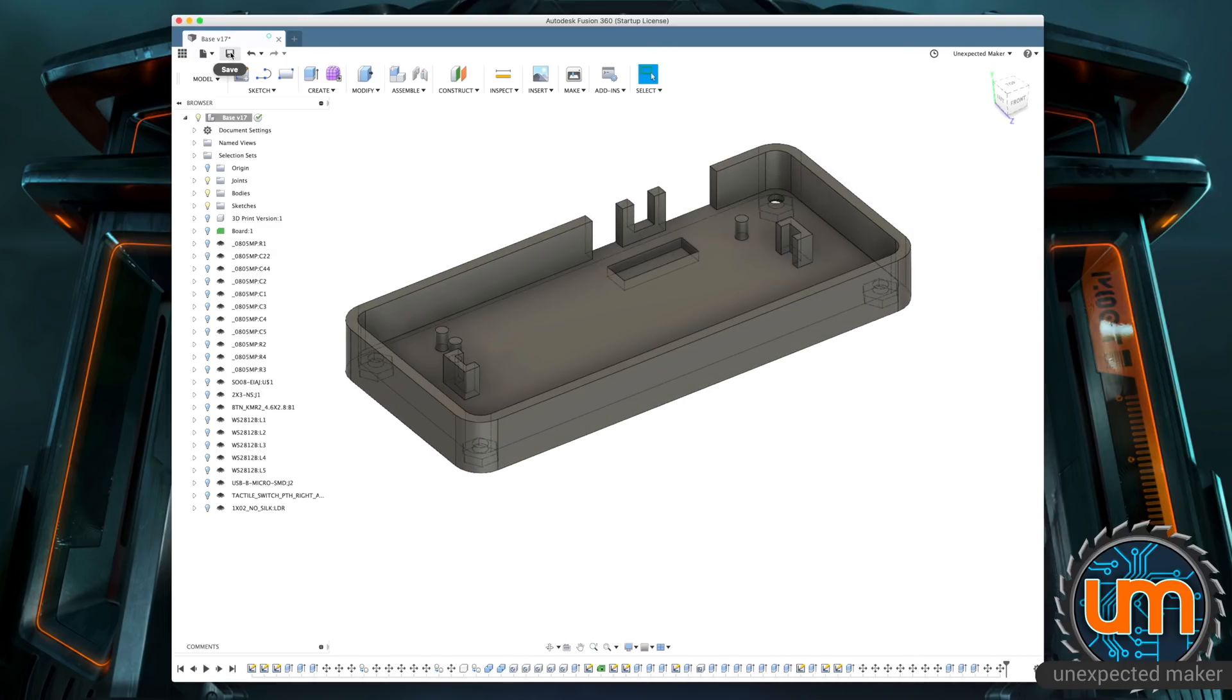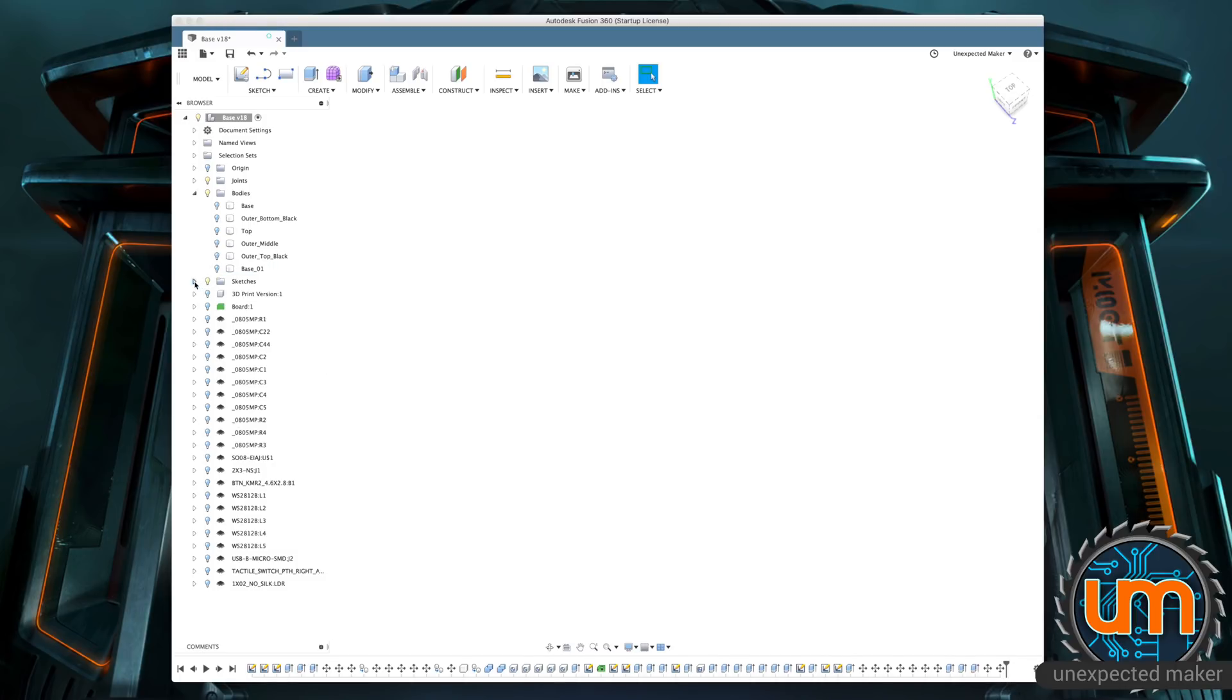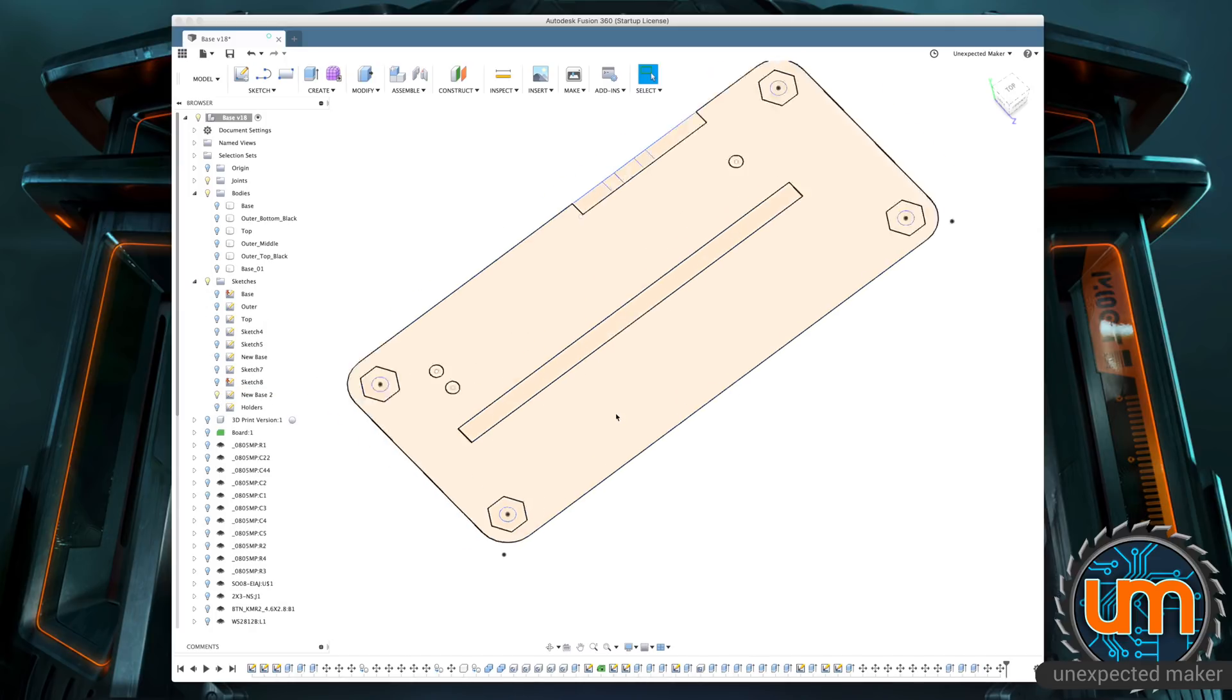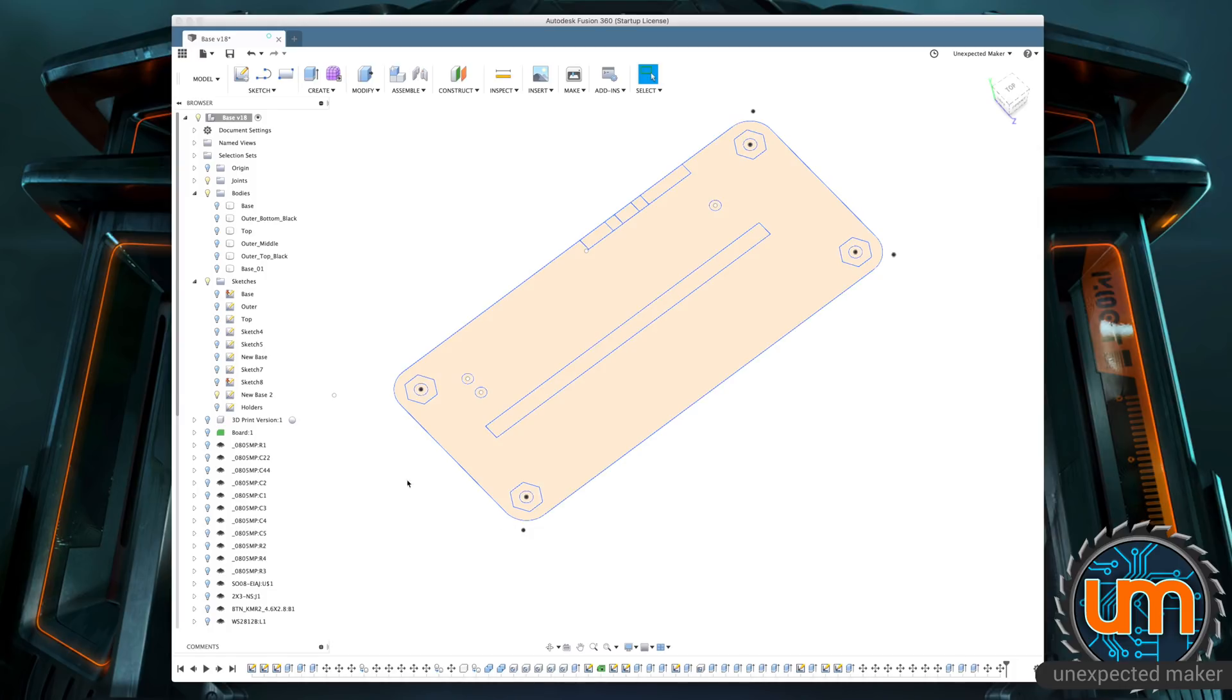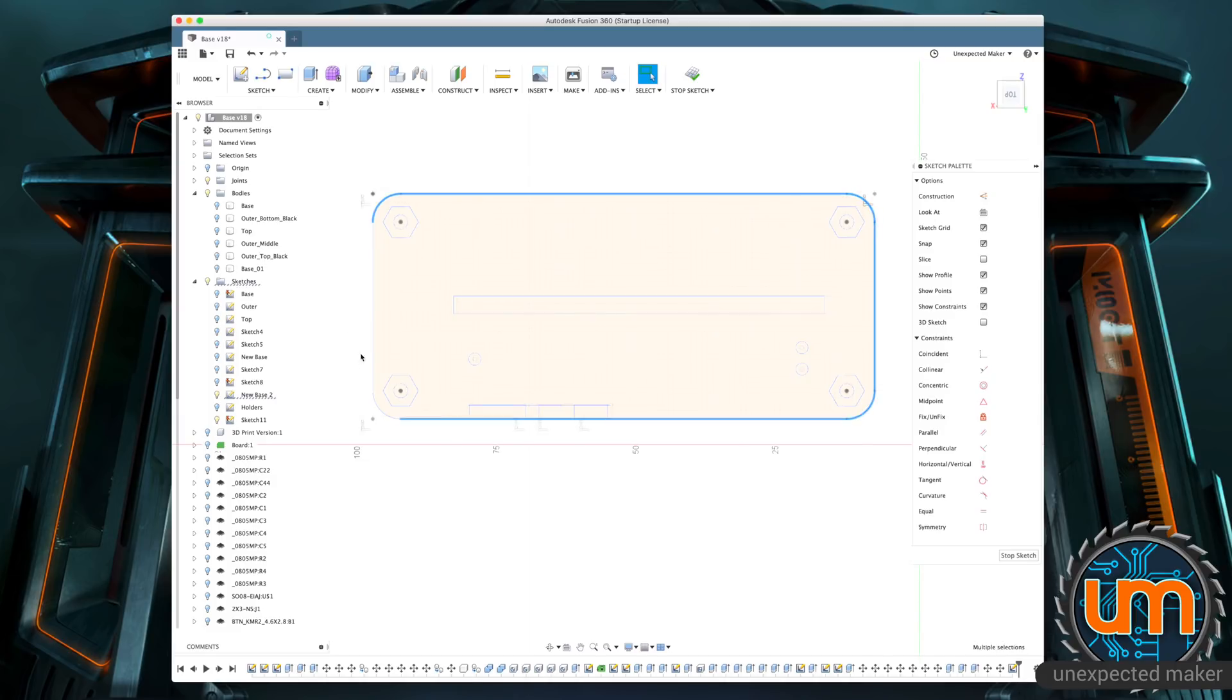So there are the two changes I wanted to make for the base. I'm just going to save that before I forget. The nice thing about Fusion 360 is every save is a revision. Although all the revisions are stored in the cloud, you can actually go back and revert to previous versions based on revision number. What I want to do now is make the shape of the rings. I'm going to turn off the base and create a new sketch.